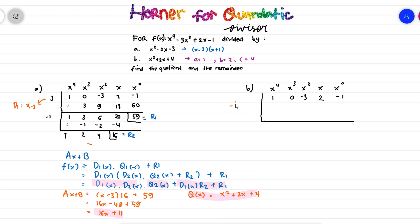For the zeros, we use a formula. The first zero is minus b over a, which substitutes to minus 2. For the second entry, instead of a second zero, we put minus c over a, which gives minus 4.